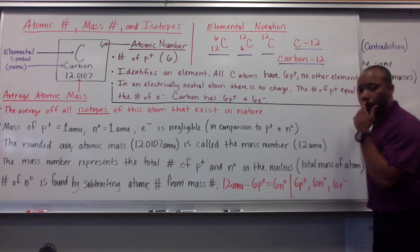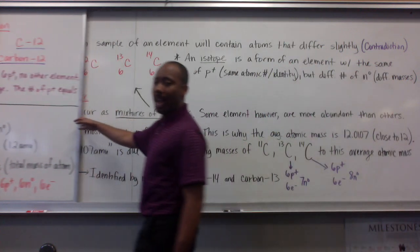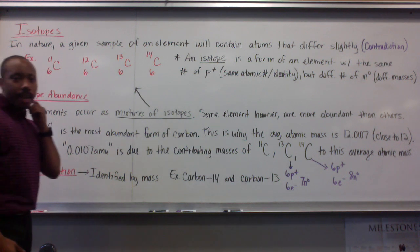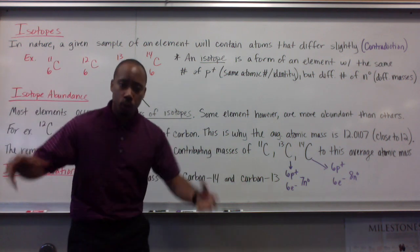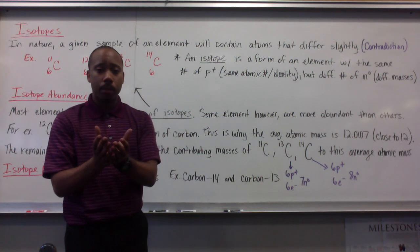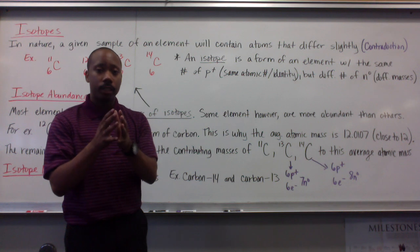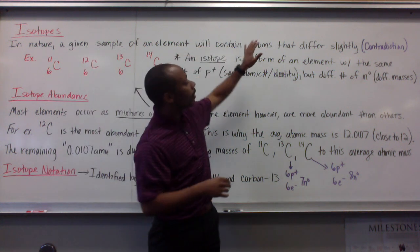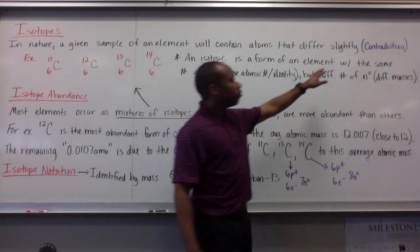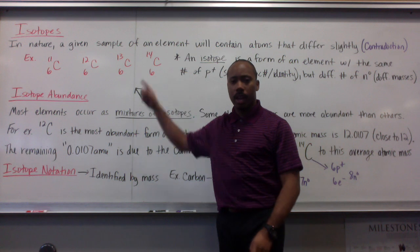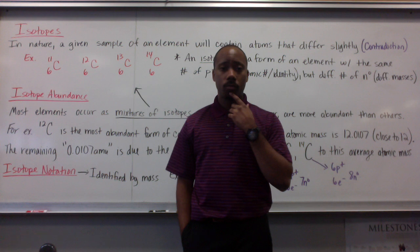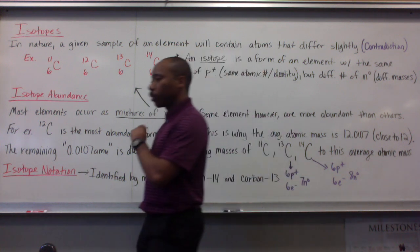Let's talk about what an isotope is. We just mentioned it up there. Now, isotopes. In nature, a given sample of an element, if I were to scoop some element up, a given sample will contain atoms that differ slightly. Now, decide what contradiction this first line is. What does that contradict that we've studied in the past?